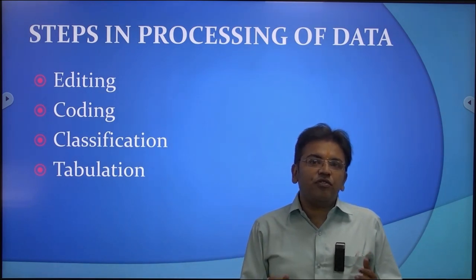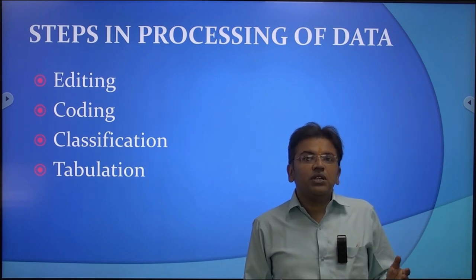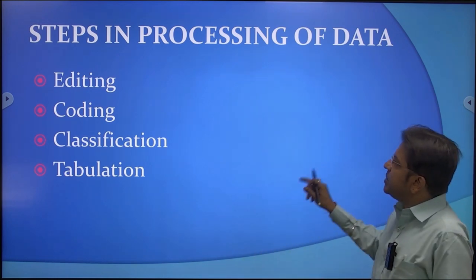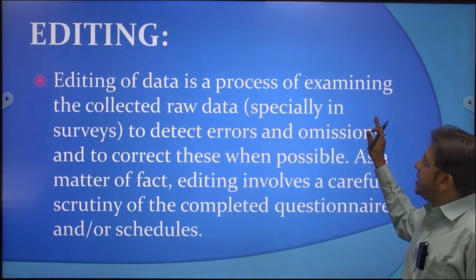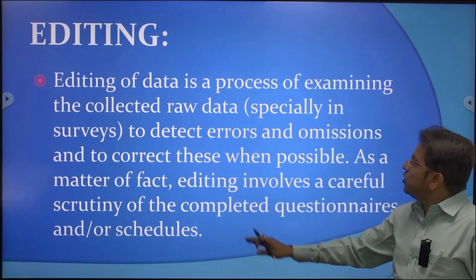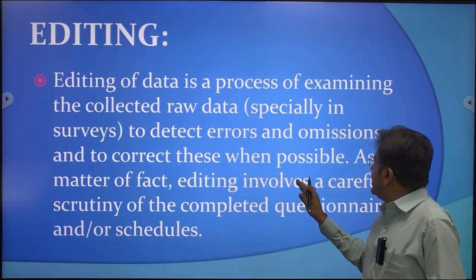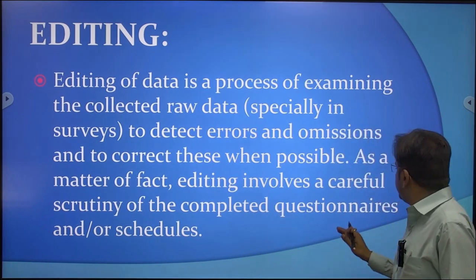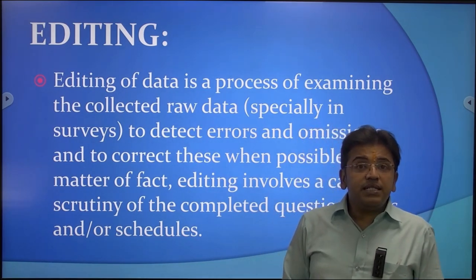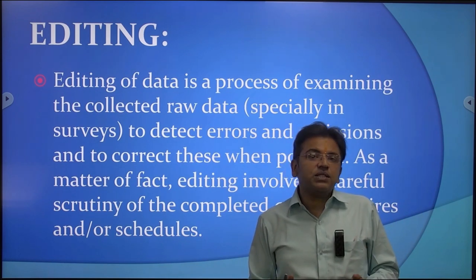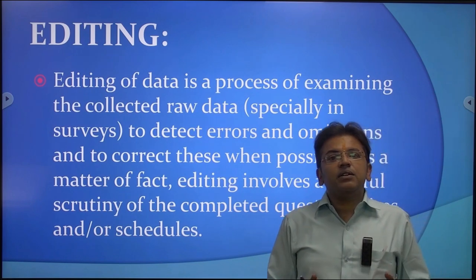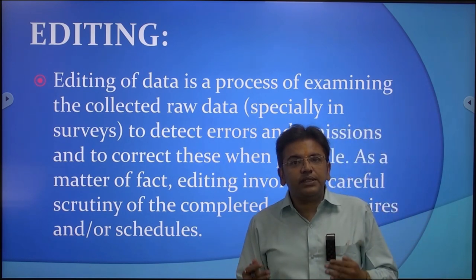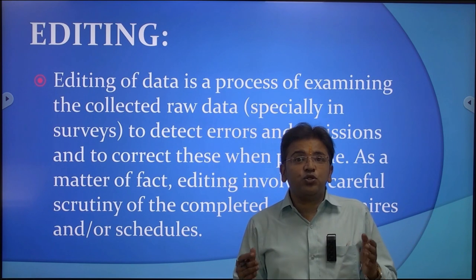After collection of data by different mediums such as questionnaire and schedule, data processing begins. The first step is editing. Editing of data is a process of examining the collected raw data to detect errors and omissions and to correct these where possible. Editing involves careful scrutiny of completed questionnaires and schedules. Whenever a researcher collects data, there are certain biases which respondents adopt, and by data editing we take only the data useful for our research work.